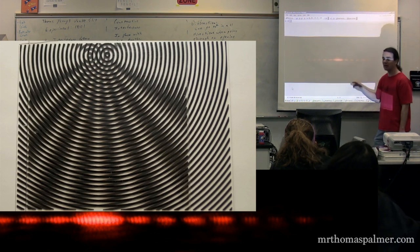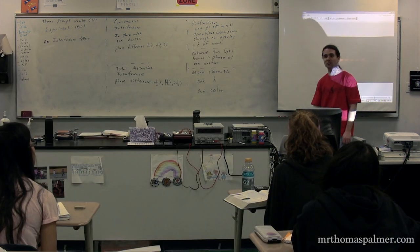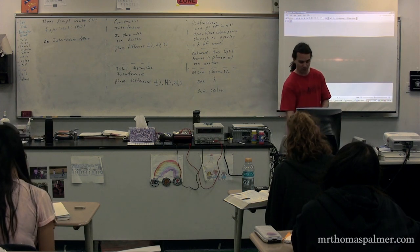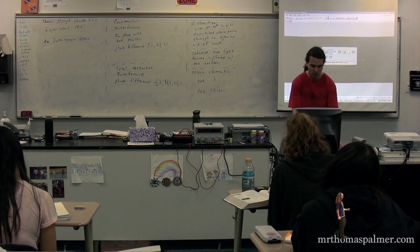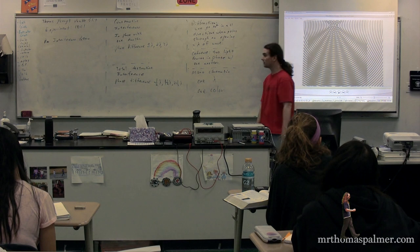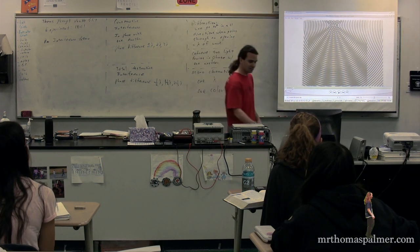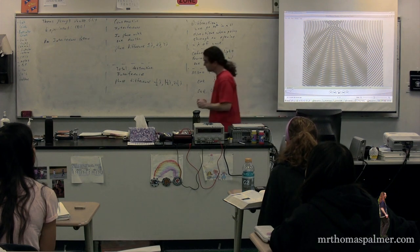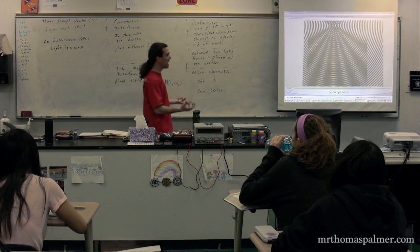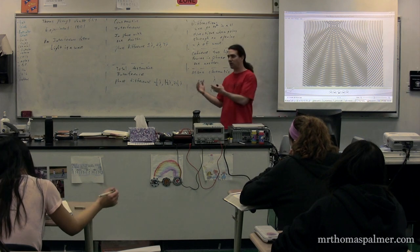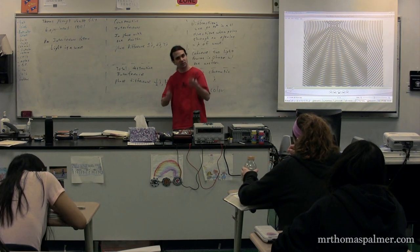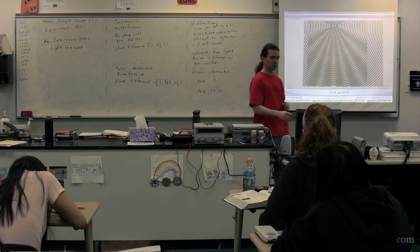You can see we have alternating constructive and destructive spots where the light is interfering with itself and therefore creating this pattern. And what Thomas Young proved in 1801 is that light is a wave. So we proved light is a wave because if light were not a wave, instead of seeing the interference pattern that we see, we would just see two dots from the light passing through the two spots here.